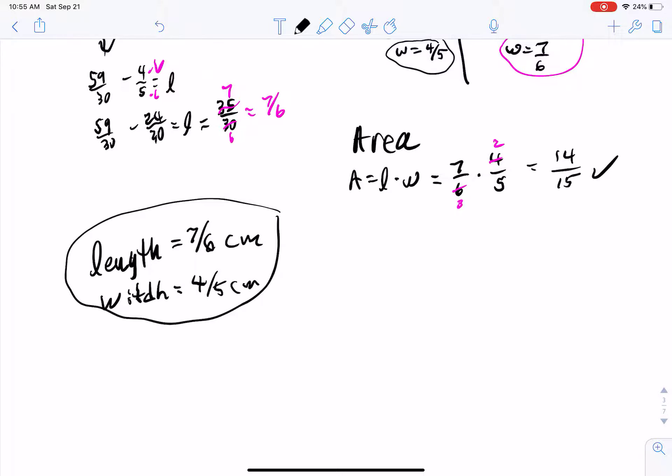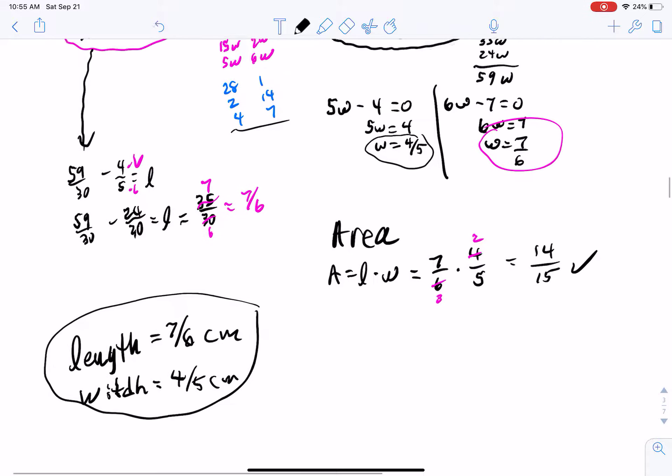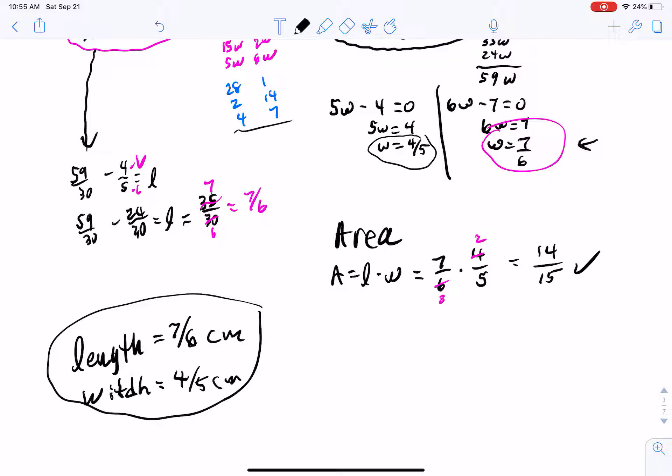However, those two things can be switched, because back up here when we solved the quadratic, we also got the width to be 7 sixths. And if I switch those things around by this equation, I would just get that 4 fifths for the length. So my other possible answer is that my length is 4 fifths centimeters, and my width is 7 sixths centimeters. There you go. All done.